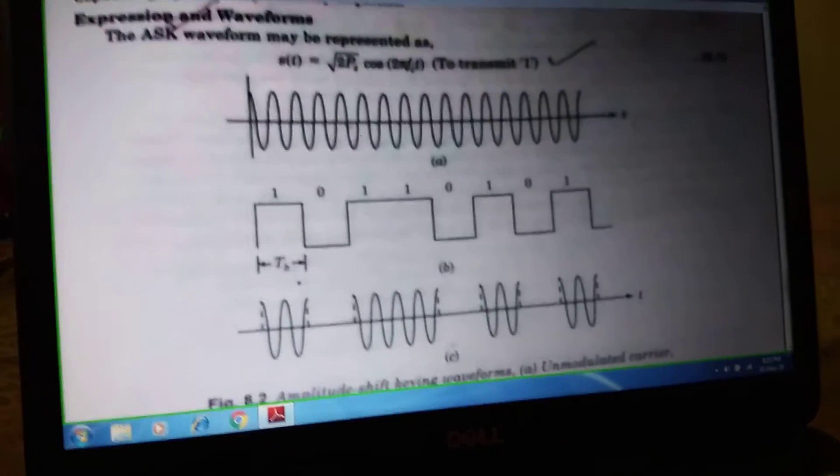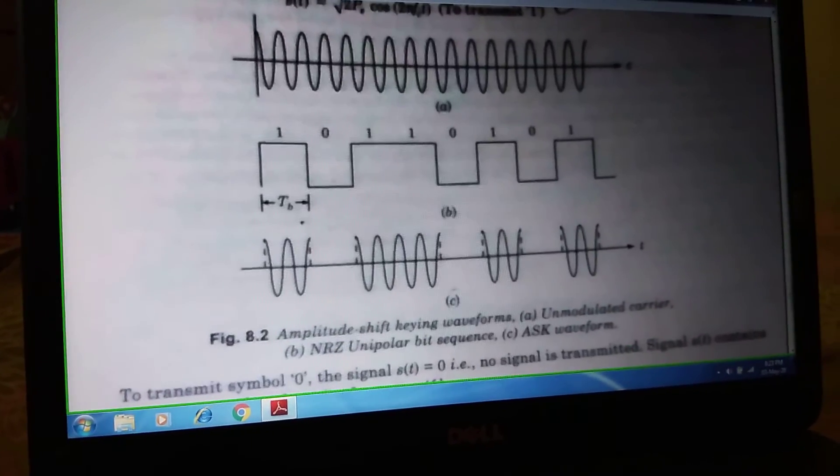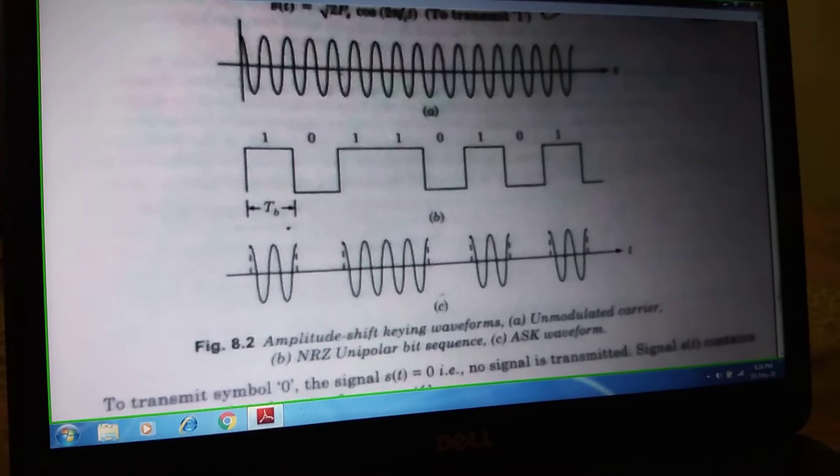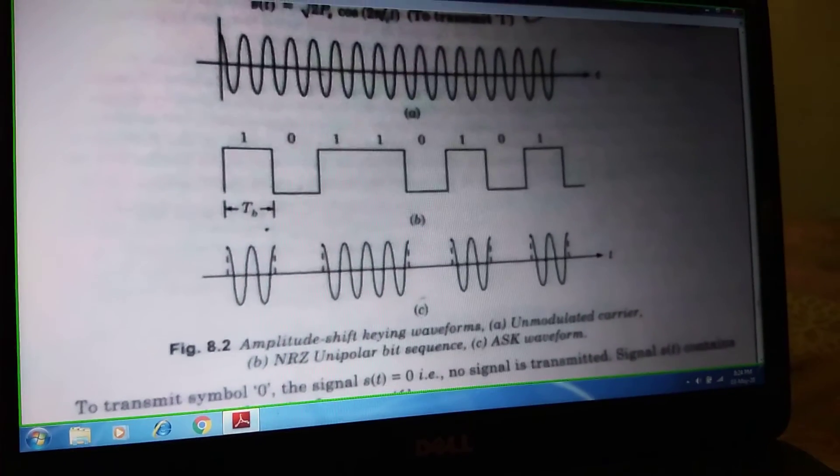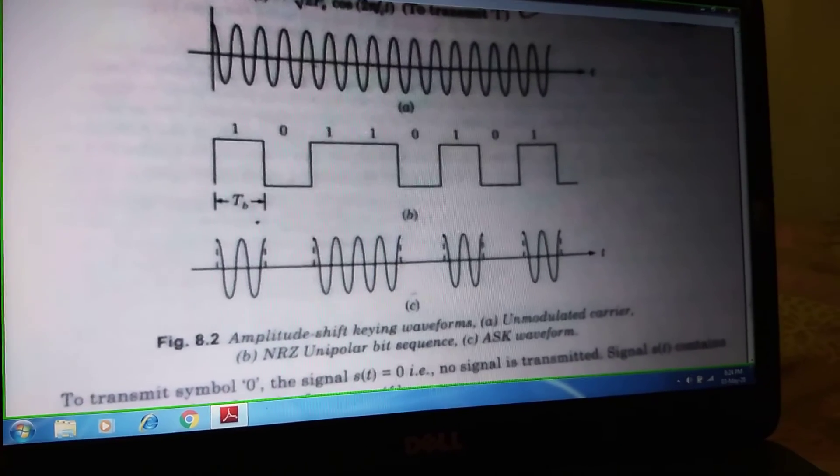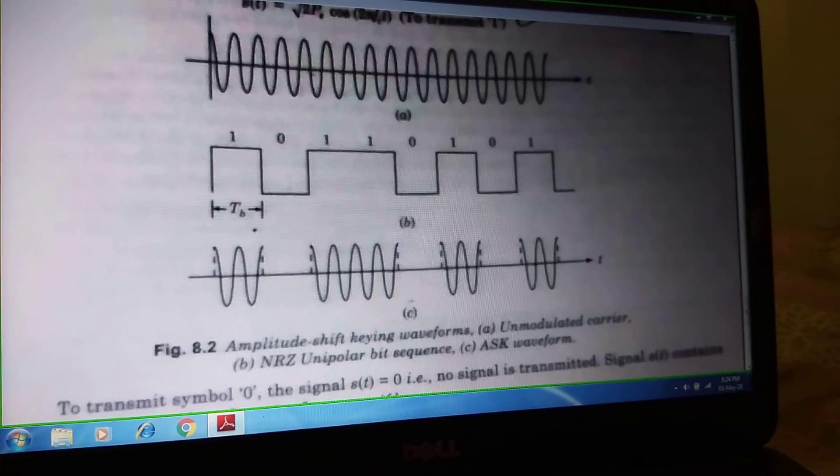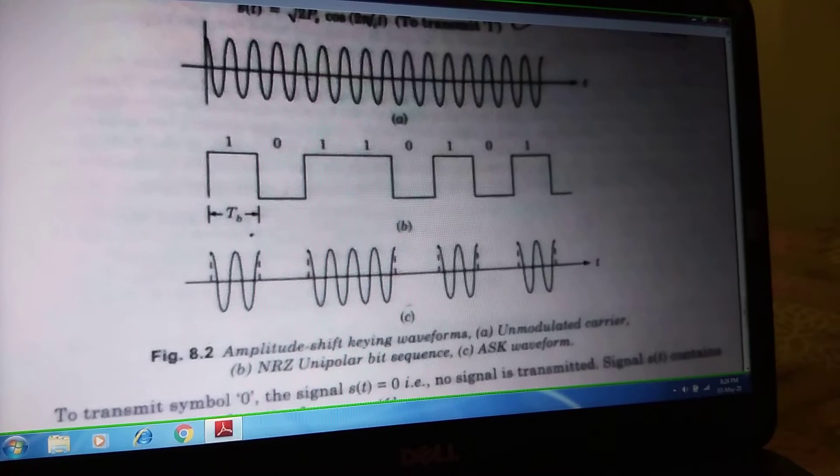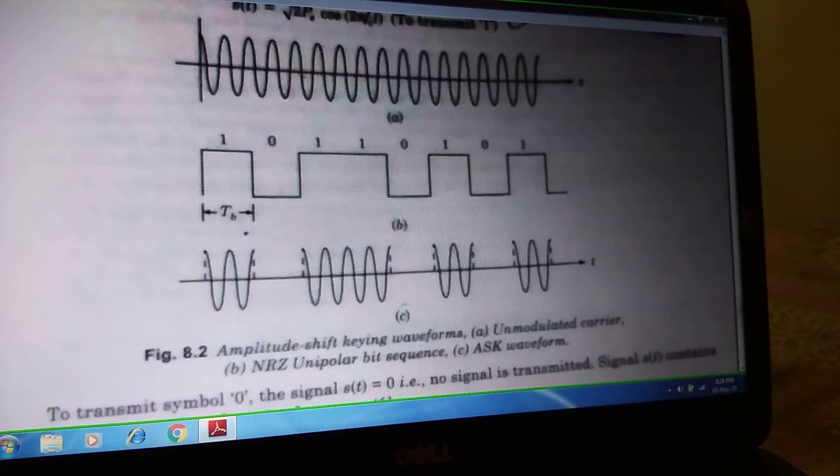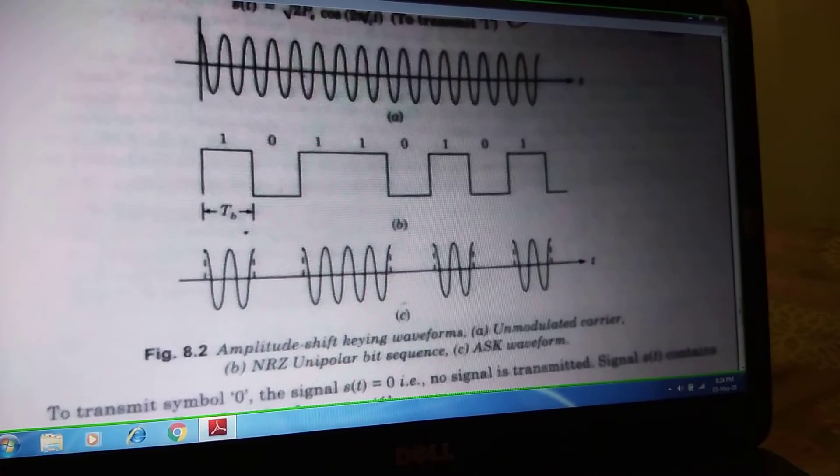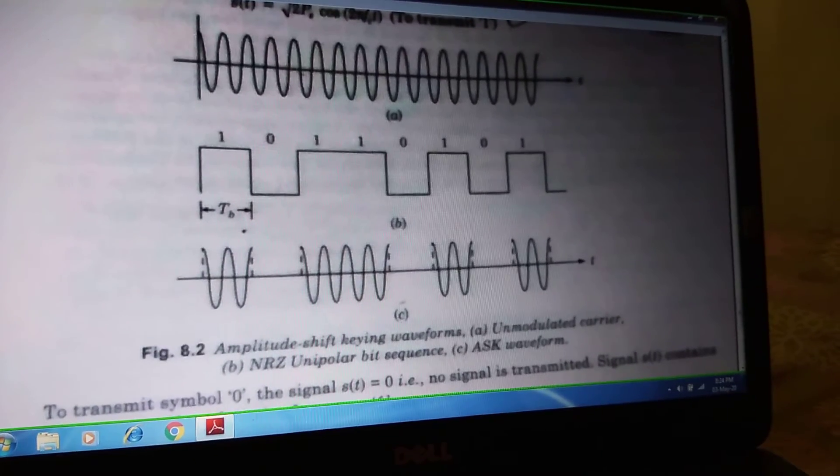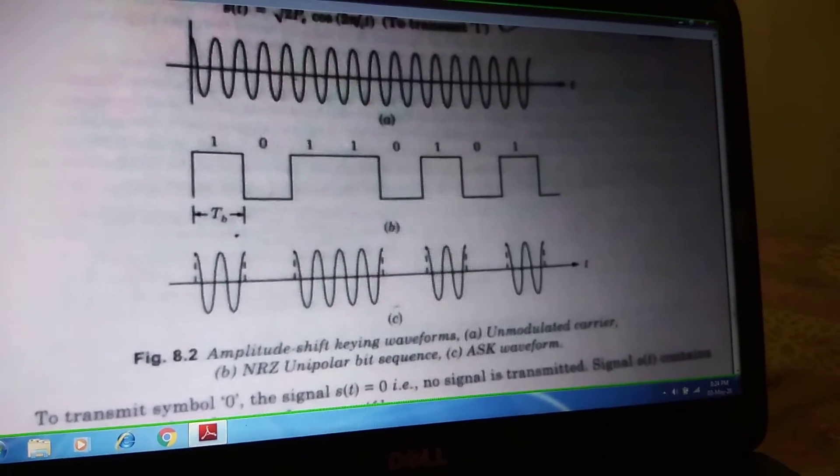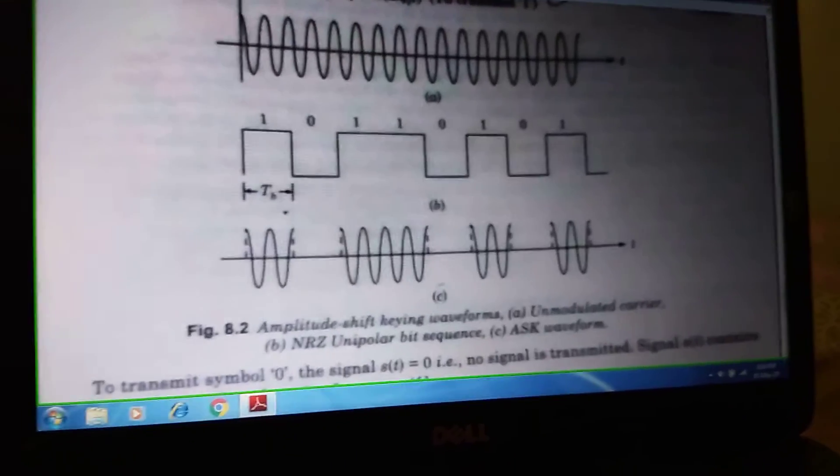If you see in the following figure, there are three figures basically. First figure, that is called the unmodulated carrier. I am talking about figure A, that is the unmodulated carrier. If you see the second figure B, that is the NRG unipolar bit sequence. NRG unipolar bit sequence means depending upon 1 or 0, the bit pattern is non-return to zero bit pattern. So the bit sequence: 1, 0, 1, 1, 0, 1, 0, 1.